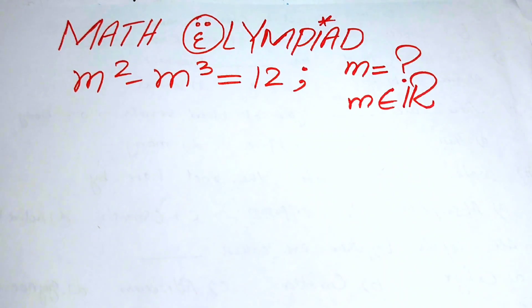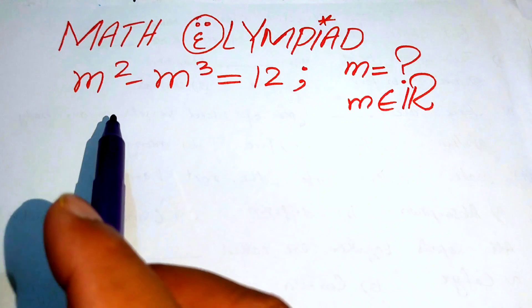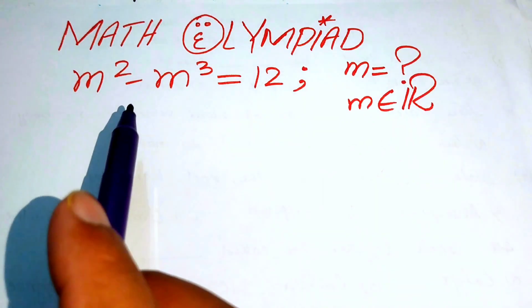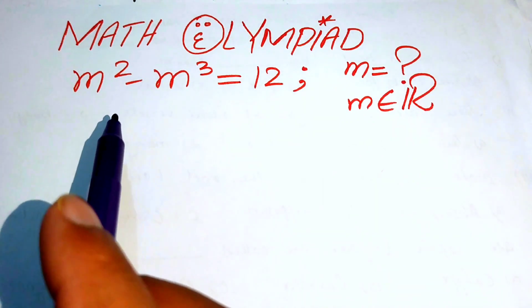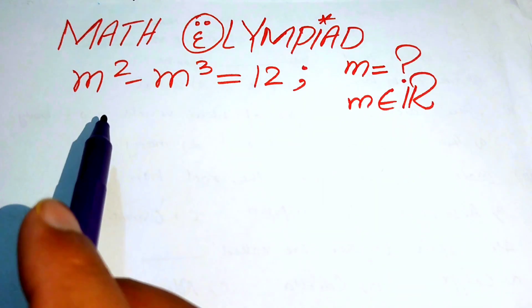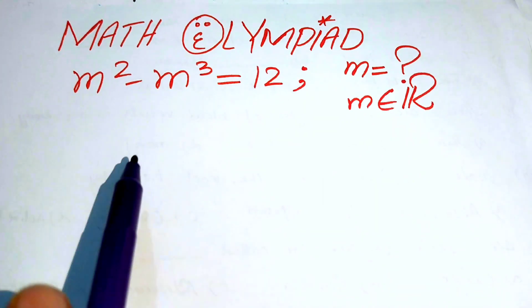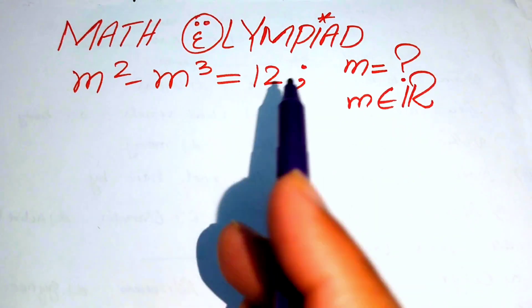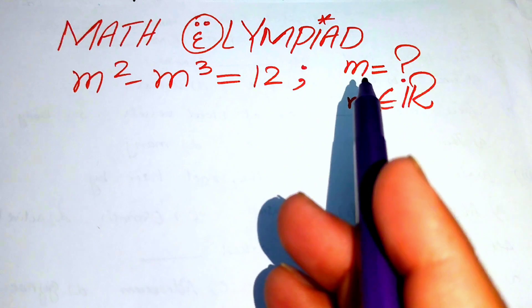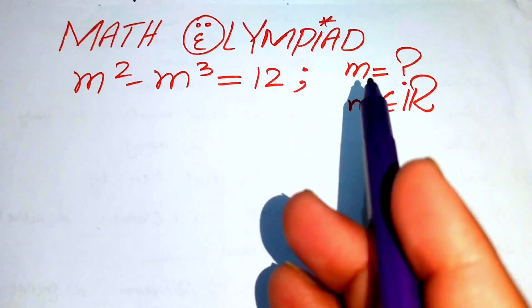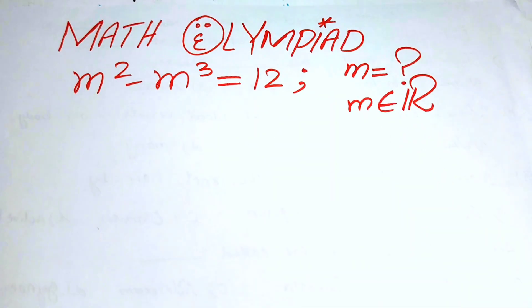Hello everyone, welcome. We will solve this Matholympics algebra problem: m squared minus m cubed equals 12, and we solve for the real values of m.